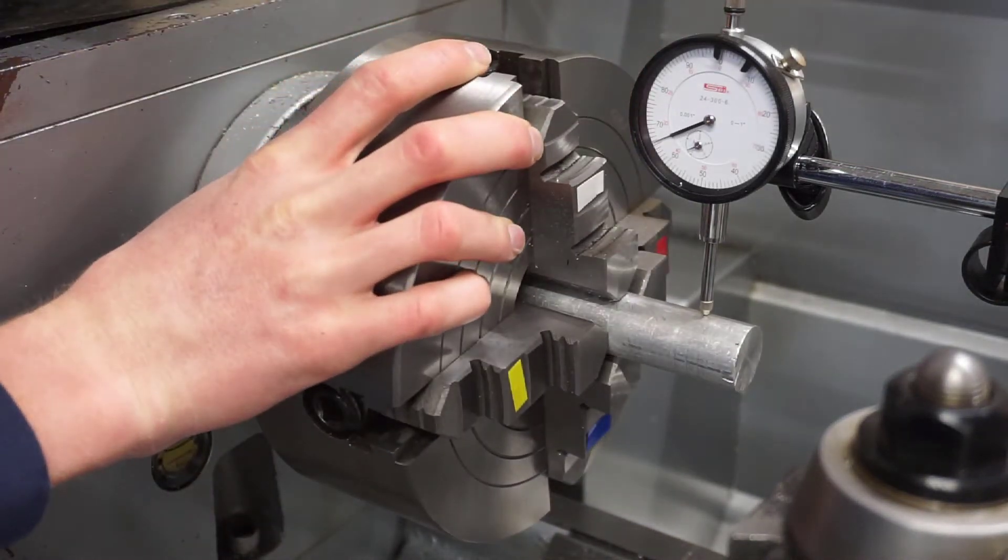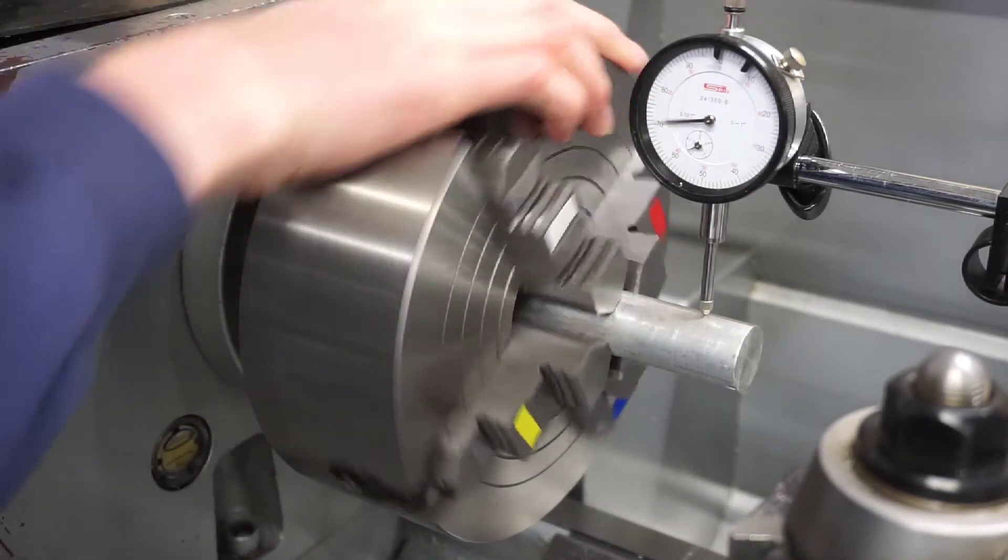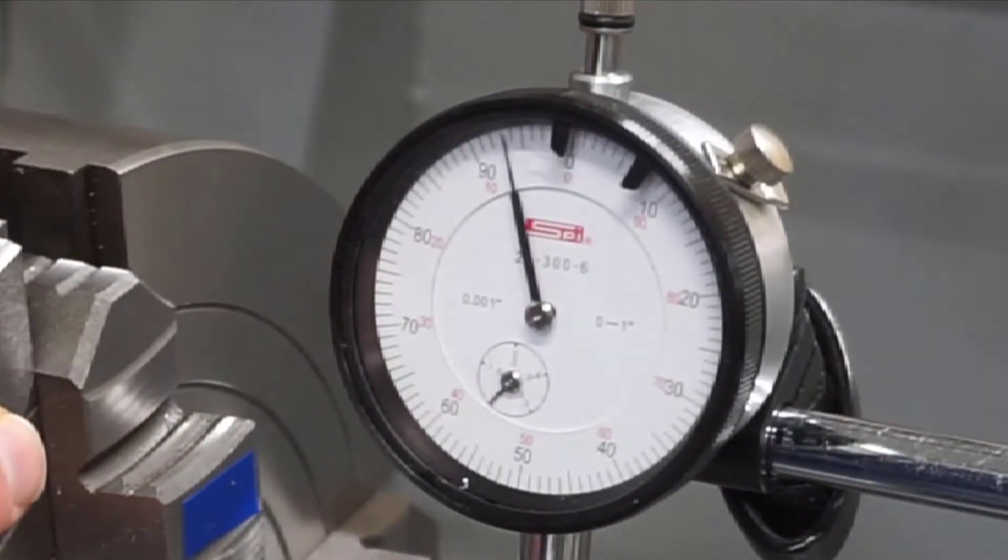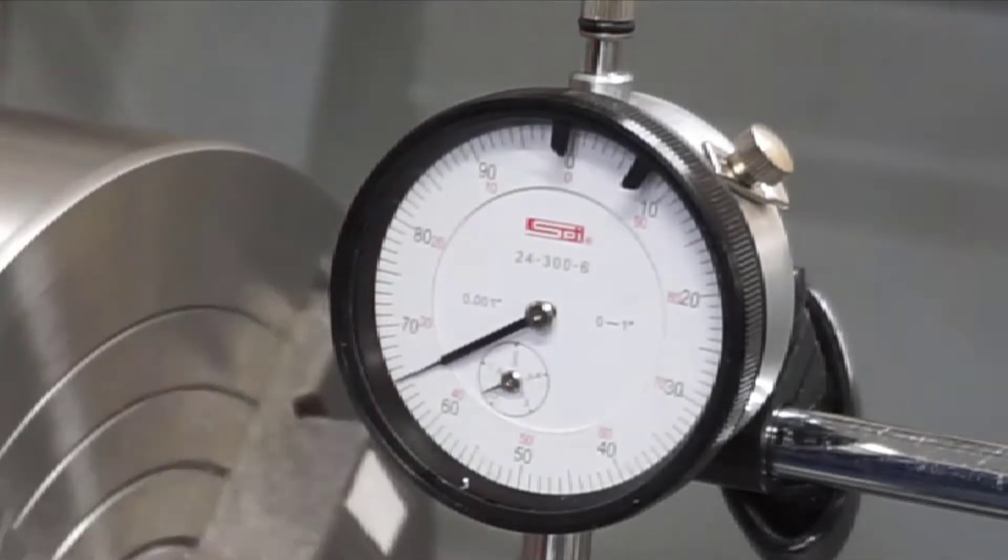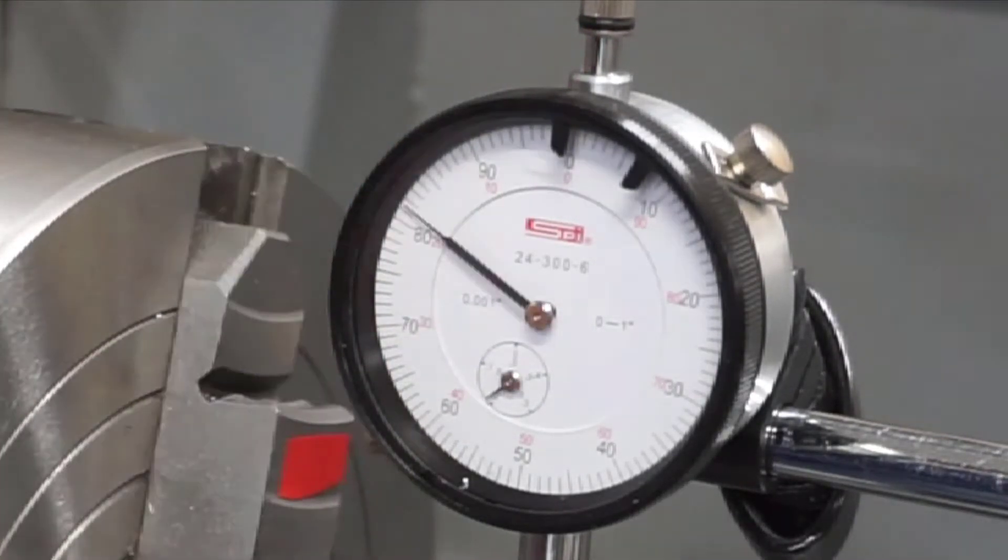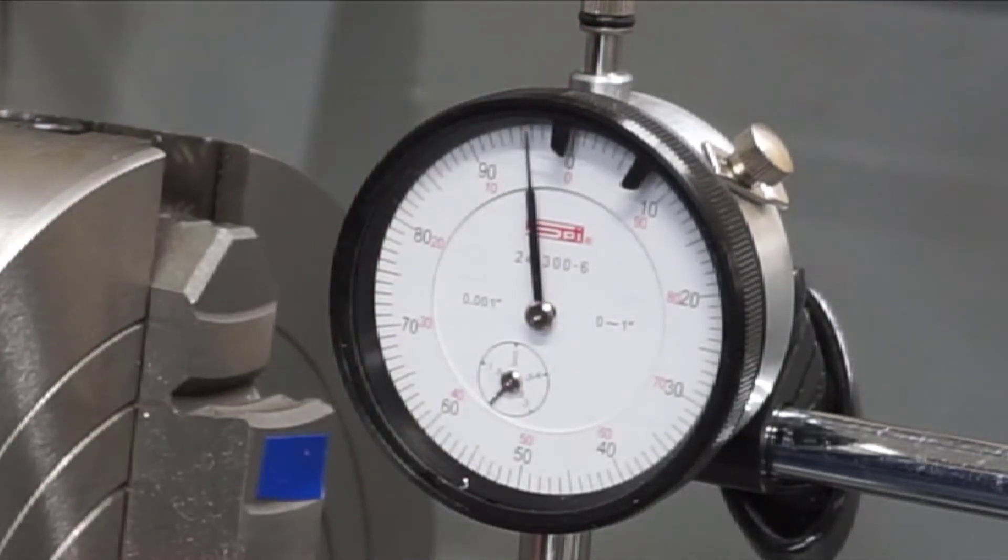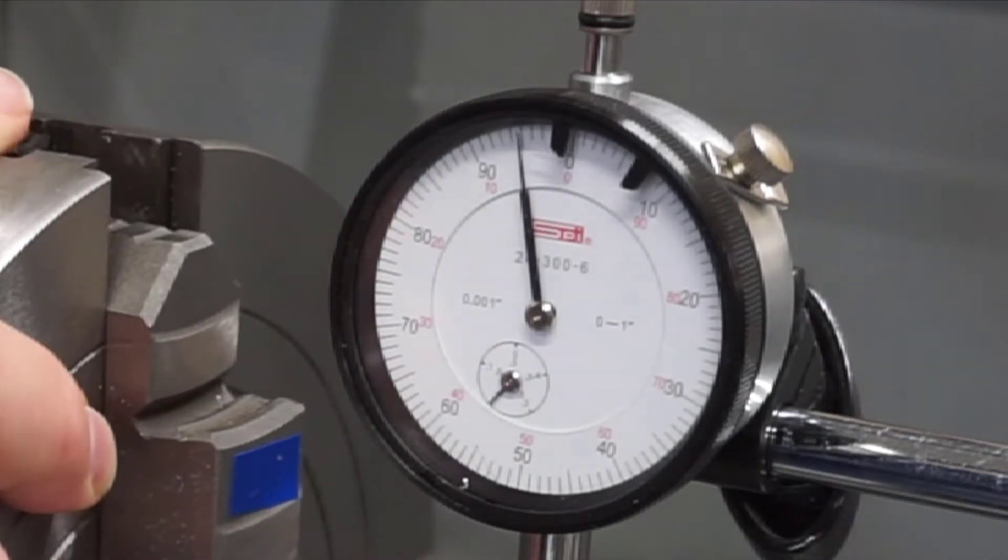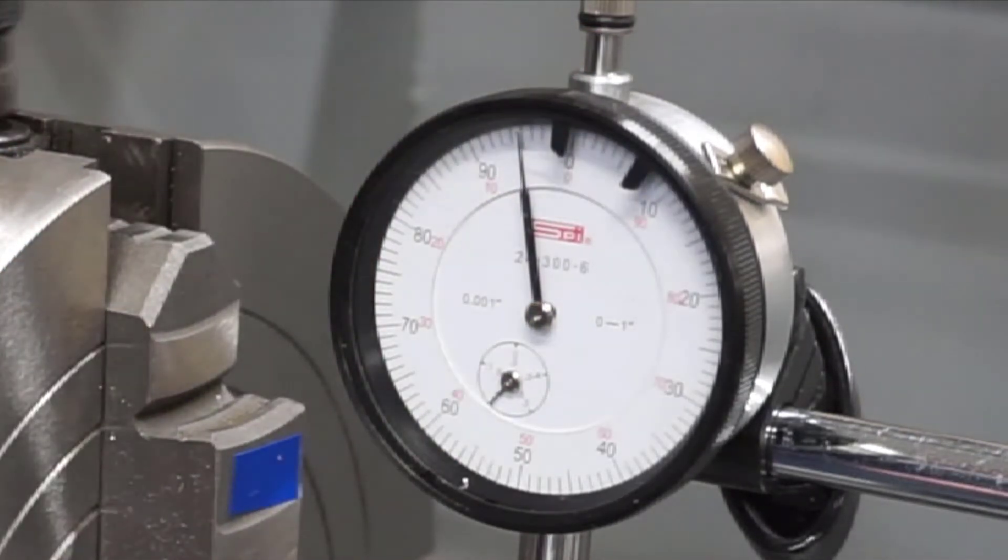We're going to go between the blue and the white, and you'll see that the dial indicator varies from about ninety-five thousandths to about sixty-five thousandths. About thirty-thousands worth of runout. So I have to take about fifteen-thousands out.